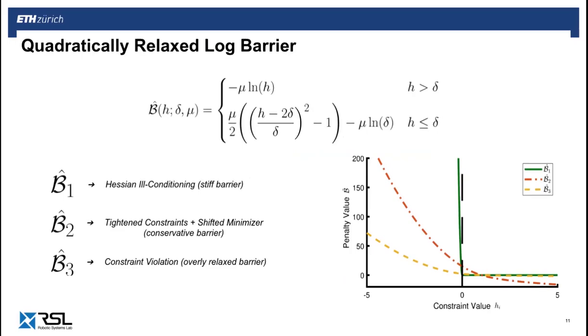The thing to note here is that depending on how the parameters are tuned, one of the following issues could arise: ill-conditioning of the Hessian matrix, tightening of the feasible region which also leads to a shifted minimizer, or strong violations in the constraints due to an over-relaxation of the problem.